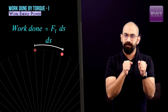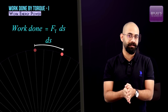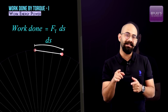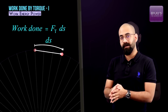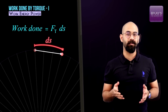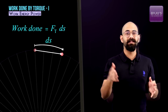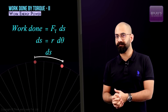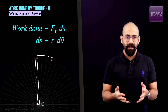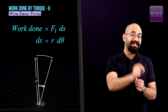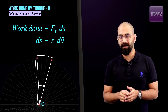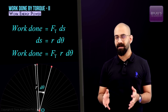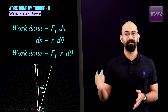One important point: ds is not the magnitude of the displacement vector. The displacement vector is a straight line, whereas ds is the arc length — the distance traveled along the arc. Now ds is nothing but r·dθ, where r is the radius of the disc and dθ is the change in angle subtended by this point at the center. So we can replace ds with r·dθ, giving work done equals Ft·r·dθ.